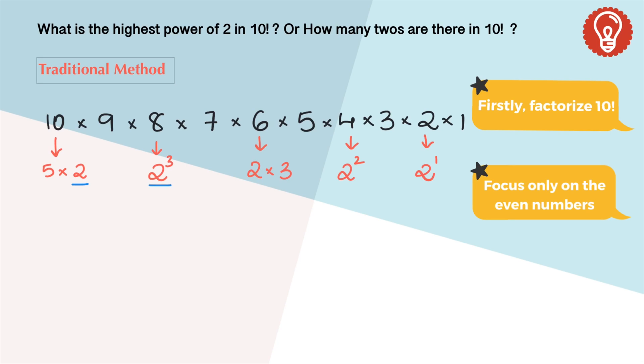That's 1, 2, 3, 4, 5, 6, 7, 8. There are 8 twos altogether in 10 factorial, or the highest power of 2 is 8 in 10 factorial.